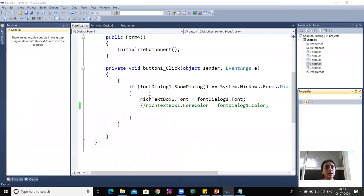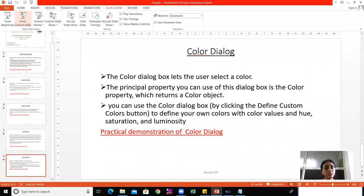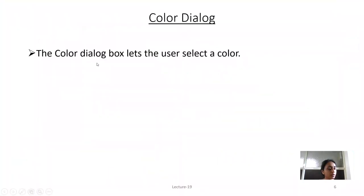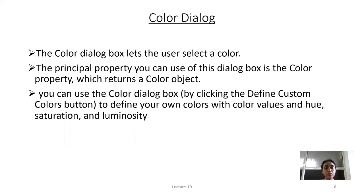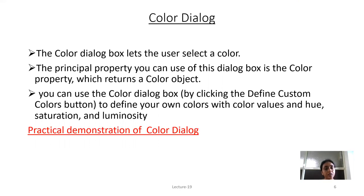The last dialog is ColorDialog. The Color Dialog box lets the user select a color. The principal property is the Color property, which returns a Color object. You can also click the Define Custom Color button to define your own colors using color values, saturations, and luminosity.